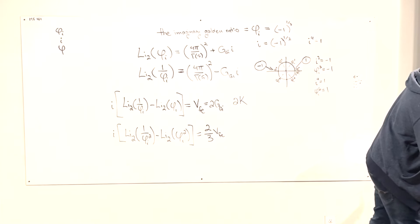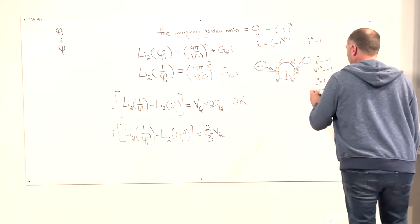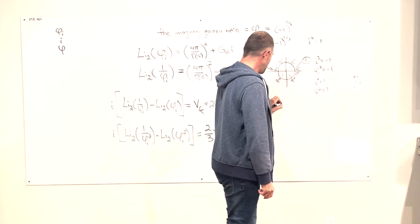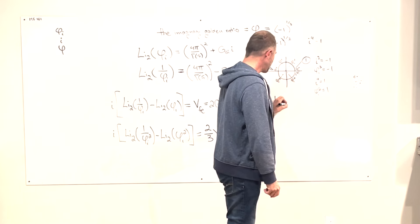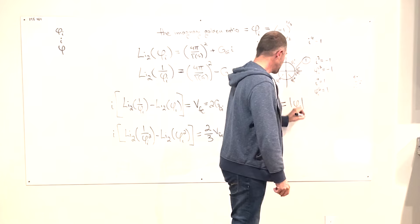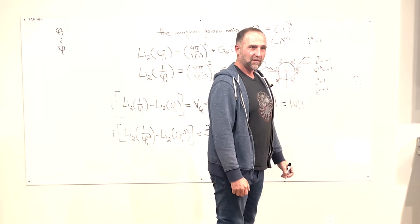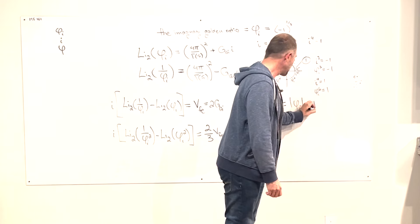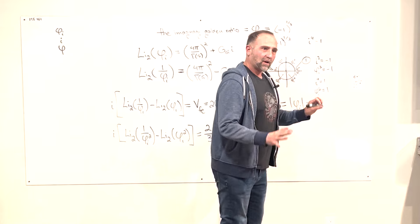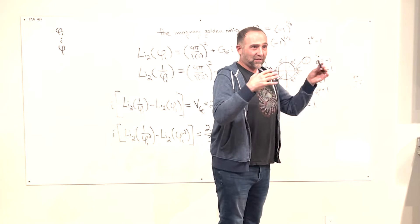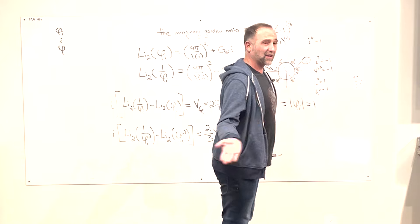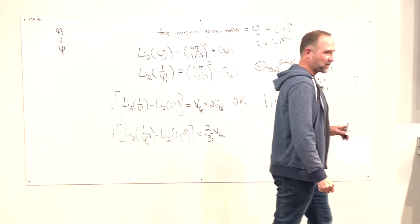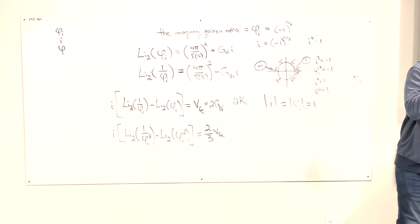VFE is equal to two times the Gieseking constant. When we change it to i, it becomes two times the Catalan constant. So the Gieseking constant and the Catalan constant have a relationship. The magnitude of i equals the magnitude of the imaginary golden ratio — both equal one. So they are unit circle dividers, and their magnitudes are equal.